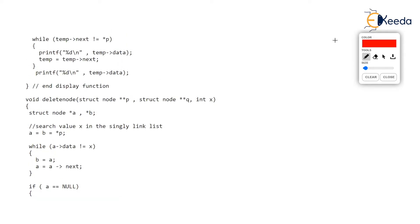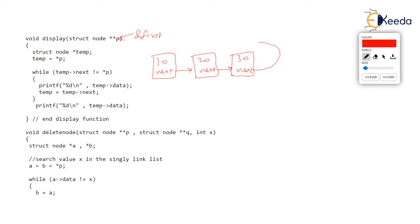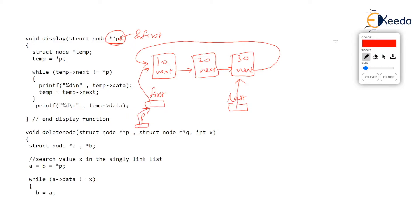The display function is called, so let's go to the display function. Here, p is a pointer-to-pointer which stores the address of first. Assume we have created a list: 10 whose next points to 20, whose next points to 30. We have a first pointer always pointing to the very first node, and a last pointer pointing to the last node. Since p stores the address of first, asterisk p is the same as first, so we can access first inside the display function using the notation asterisk p.